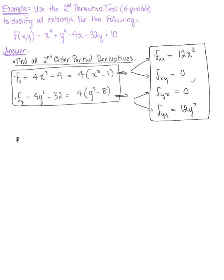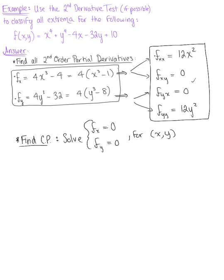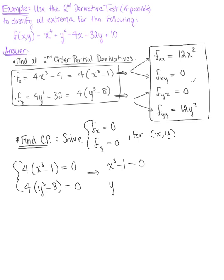We are now ready to find the critical points — those potential extrema. To do this, we are going to solve the system of equations created by setting the first order partials equal to 0. We solve for potential critical points as ordered pairs (x, y). So we have 4(x cubed minus 1) equals 0, and 4(y cubed minus 8) equals 0.